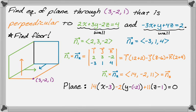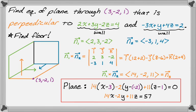Since the planes in the problem are given in expanded form, I'm going to do the same to this. So I'm just going to multiply it out and then move the constant over. So I get 14x minus 2y plus 11z equals 57.